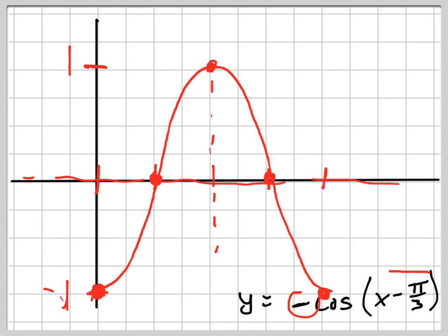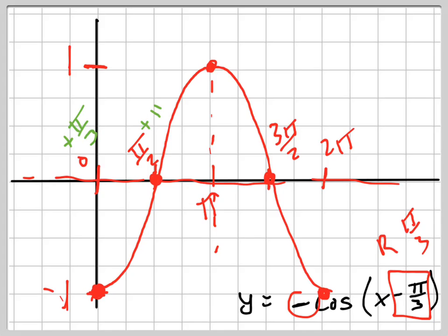But now I'm not done, because I also have to shift it right, pi over 3. So normally, this would be pi, this would be 2 pi, and this would be 3 pi over 2, and this would be pi over 2, and this is 0. But now, since I'm shifting it pi over 3 to the right, I'm going to literally add pi over 3 to each one of these things and do a little bit of algebra work here. Add pi over 3, add pi over 3, add pi over 3 to each one of these.